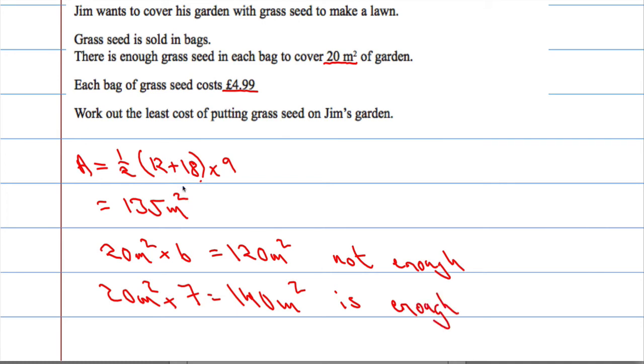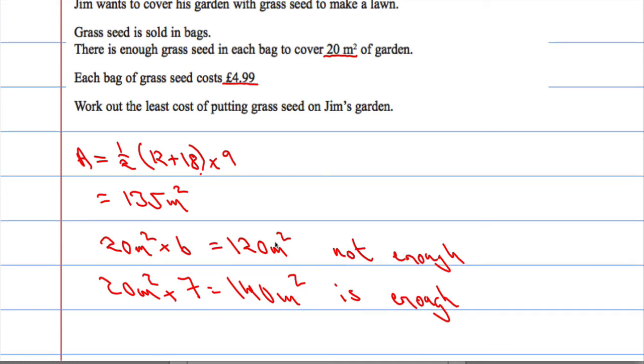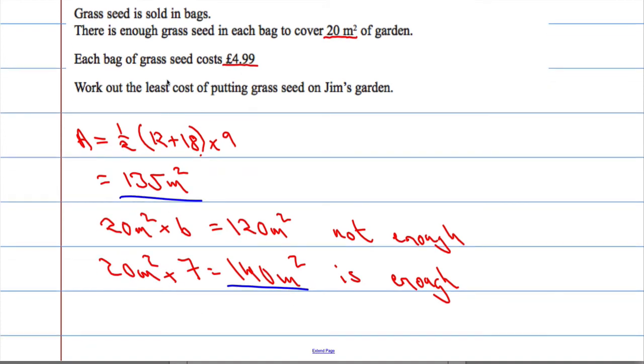Now he has to buy bags by the bag. He can't buy six and a half bags or 6.2 bags, so that's why I didn't bother doing any division there. I just wanted to show you that six bags ain't enough. Seven bags will do me. Seven bags will cover the whole garden. In seven bags we get 140 meters squared worth of seed. We only need 135, so we need seven bags.